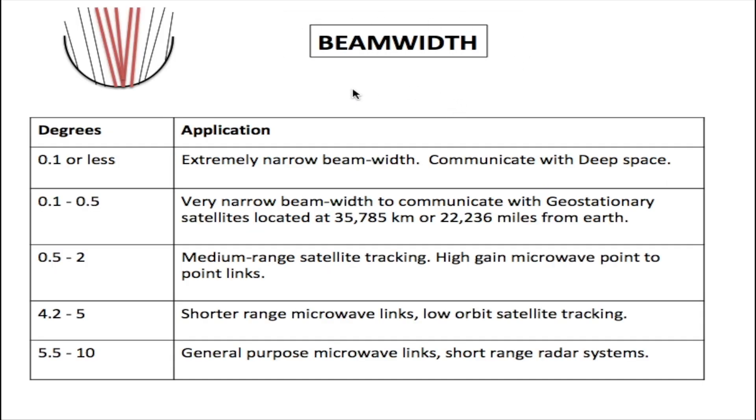This is the beam width chart. We have all the beam widths in degrees on this side here. We have 0.1 or less, which is our extremely narrow beam width to communicate with deep space. From 0.1 to 0.5, this is for very narrow beam width to communicate with the geostationary satellite. This is what we were talking about earlier.